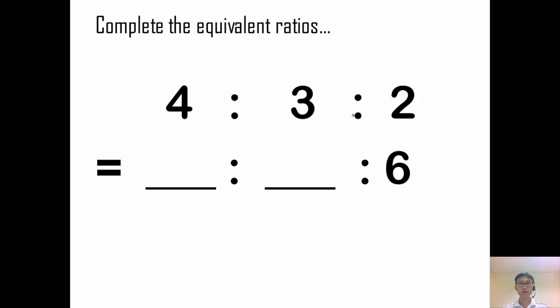Why don't you try this on your own and see whether you can get it right. Let's check. So 2 to 6 is times 3. So I would times 3 here. And I would times 3 here. So this gives me 12 is to 9 is to 6. Did you get it correct? I'm sure you did.